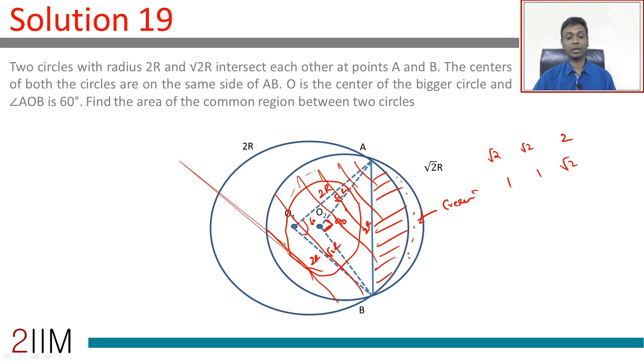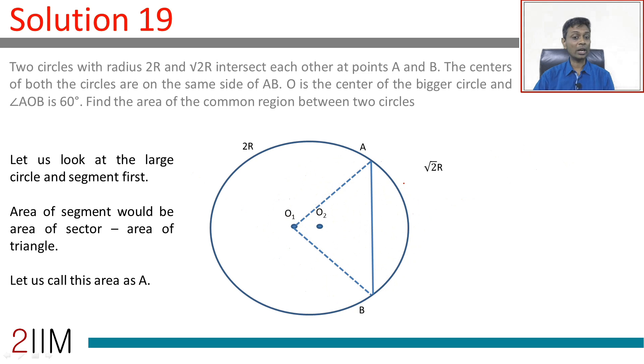this space, this is a segment, a major segment. From the larger circle, think about this region, this is a minor segment. So, for the smaller circle, we can extract the major segment. For the larger circle, we can think about the minor segment and then add these two up, we should get area common between these two. And so, let us go right ahead and do that.